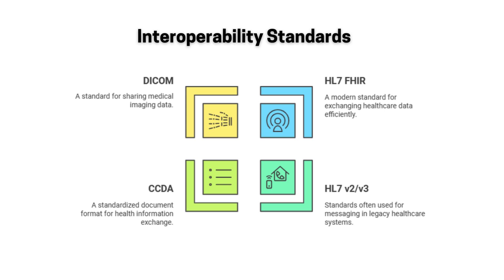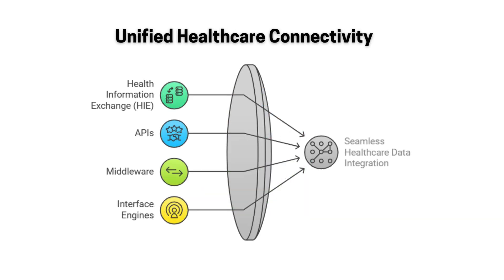So we've got these standards, and now the systems can technically talk to each other. But how does the information actually move from, say, hospital A to hospital B? You've got these things called HIEs — health information exchanges. Think of them as regional hubs that connect different healthcare providers. All the hospitals in a certain area might be connected to this HIE and can share data through it. It's a secure network that facilitates the exchange of information.